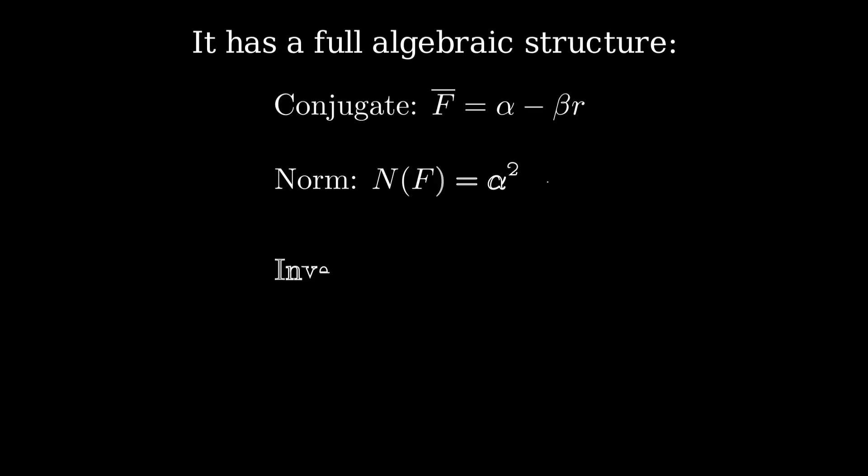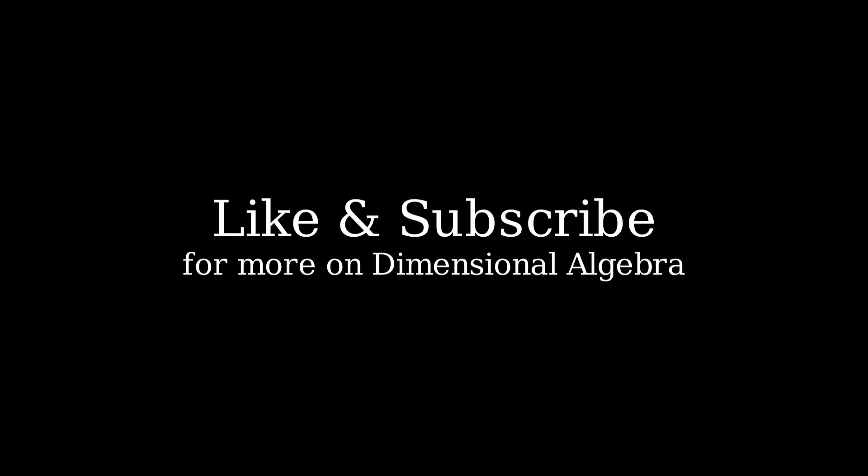Now, returning to real dyadics, remember that a dyadic of the form alpha plus beta times r, with real coefficients, evaluates to alpha minus beta. In the end, this is just a real number. The dyadic system not only supports arithmetic, but also comes equipped with a conjugate, a norm, and a clean formula for inverses. The conjugate of f is alpha minus beta r, the norm is alpha squared minus beta squared, and the inverse is the conjugate divided by the norm. All of this gives dyadics a full algebraic structure, as deep as it is elegant. If you enjoyed this journey through dimensional algebra, don't forget to like and subscribe for more. Thanks for watching.